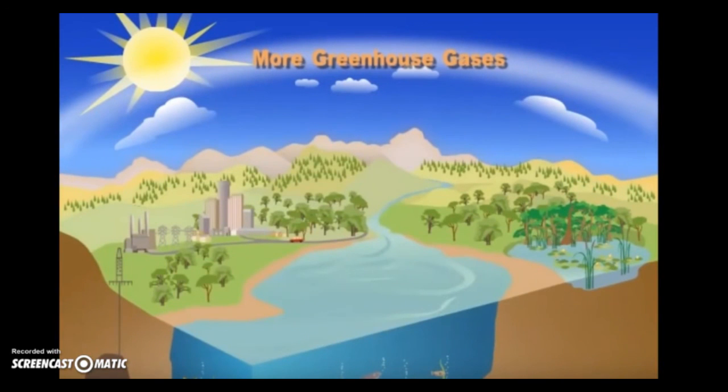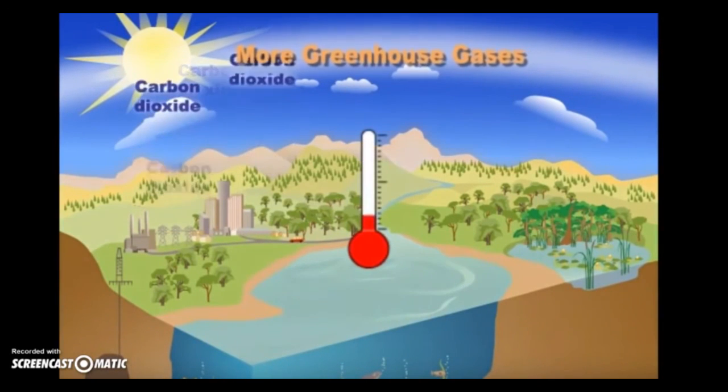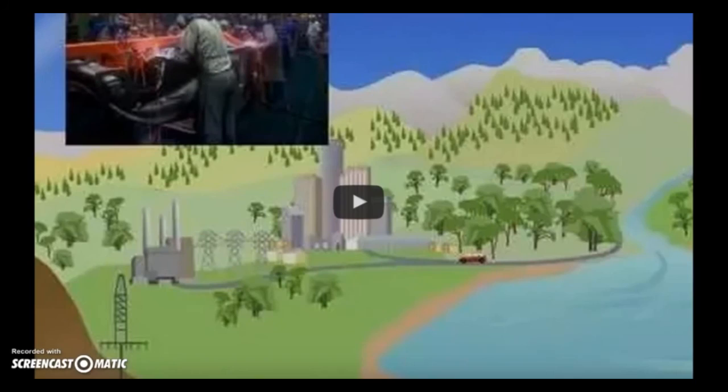It's a big problem, and it's all happening because we are overloading the atmosphere with greenhouse gases. By making the greenhouse effect stronger, we're upsetting the Earth's natural balance and warming our planet.